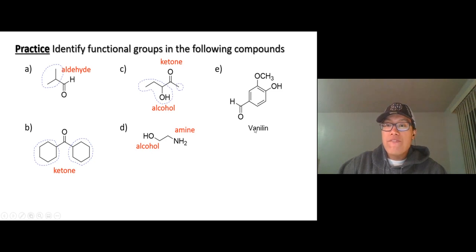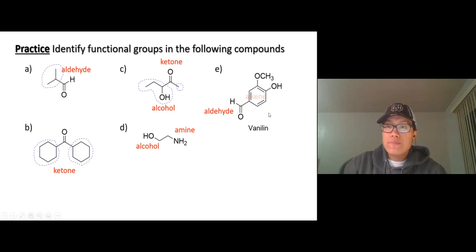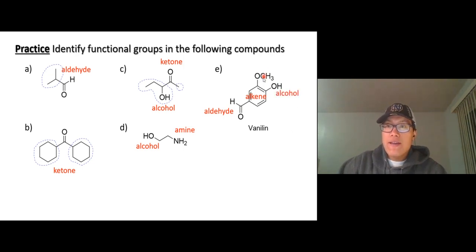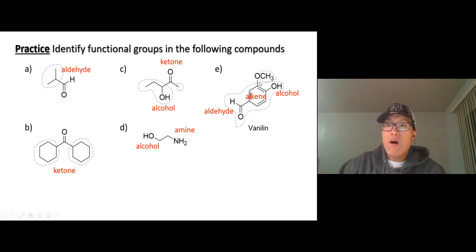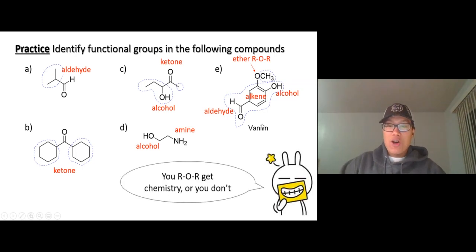In compound D, we have an alcohol (OH) and NH2 — that's an amine. Now vanillin — this compound smells like vanilla. We have an aldehyde (C double bond O with H), an arene, an alcohol, and oxygen between two carbon chains — an alkyl group here and another one there — so oxygen between two alkyl groups within the chain: that's an ether.